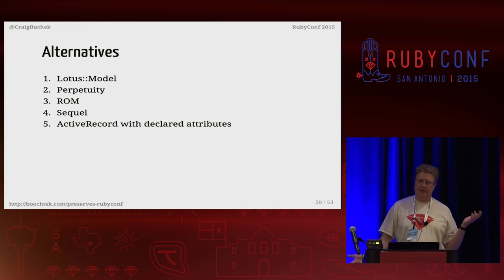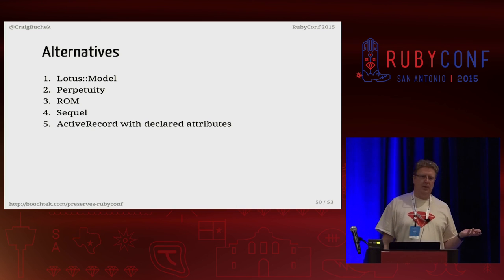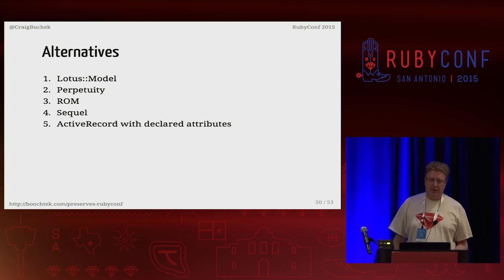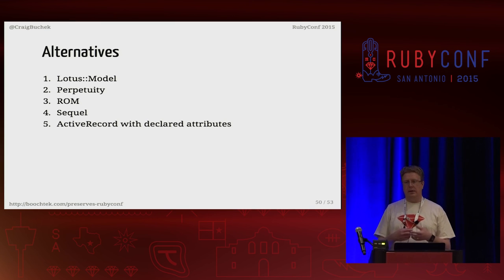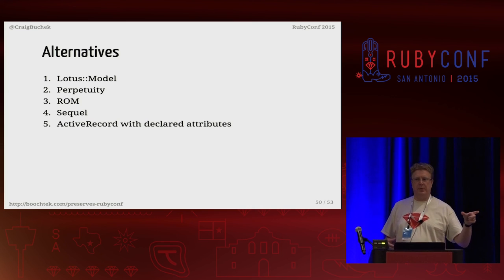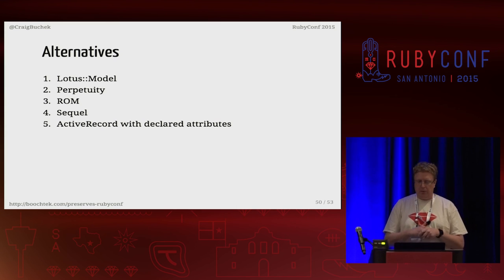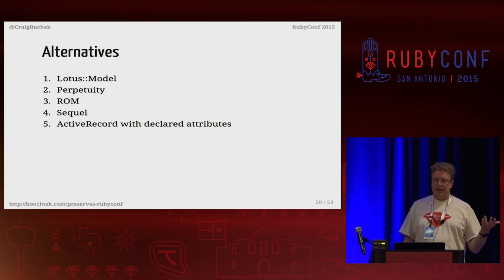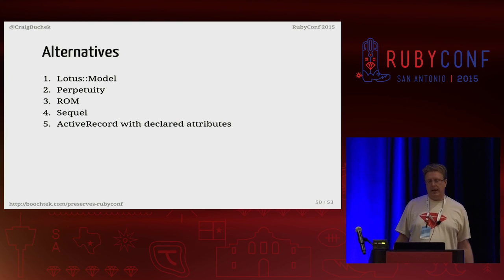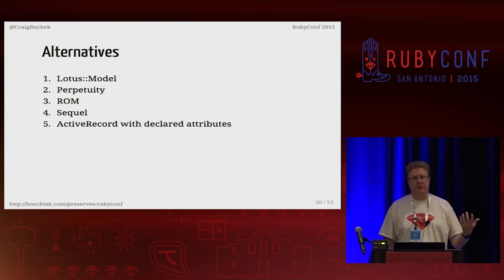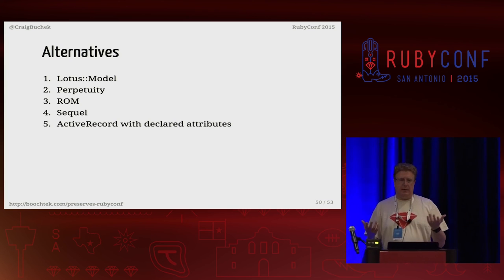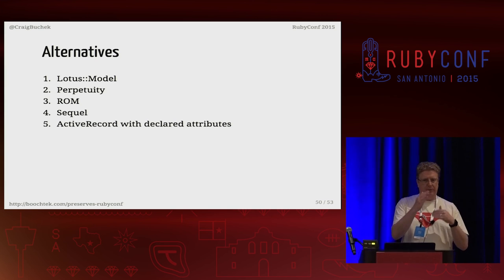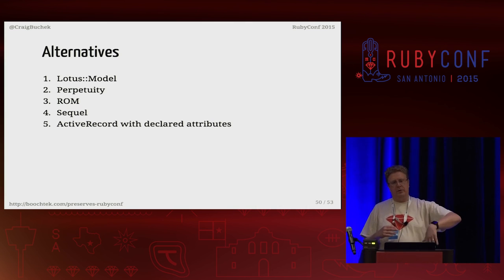My last choice is using ActiveRecord with attribute declarations, which were added in version 4.2 but no one really told us until work started on version 5. You can declare in your model class that you have an attribute that is the ID and it should be an integer, and it will verify that. Before that, there were plugins like Annotate Models — written by Dave Thomas — which adds comments to your model file listing the fields and their types. I also wrote my own thing called Virtus ActiveRecord, which uses Virtus to describe attributes and makes sure the database schema and what you declared in your model match up when the model class loads.